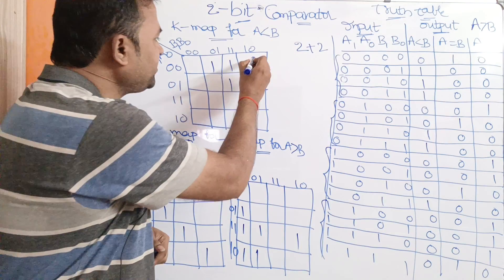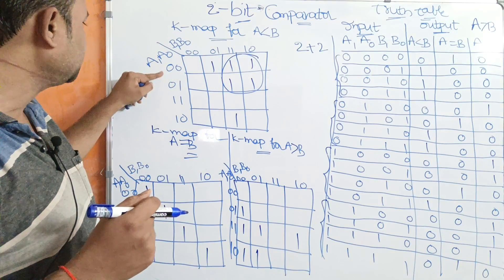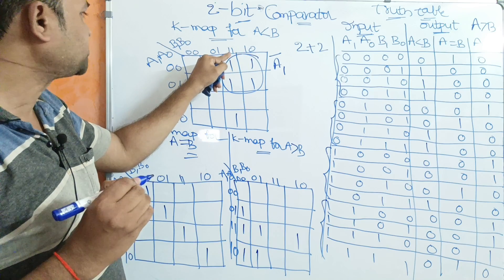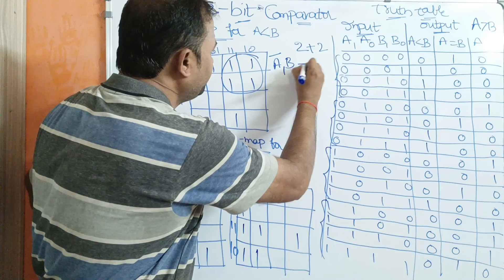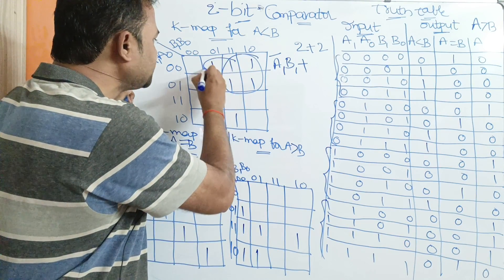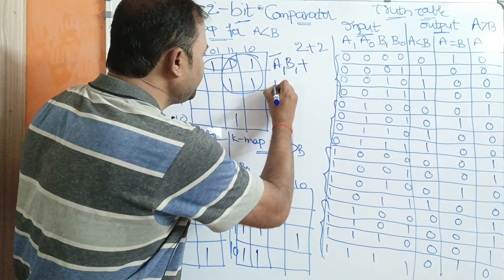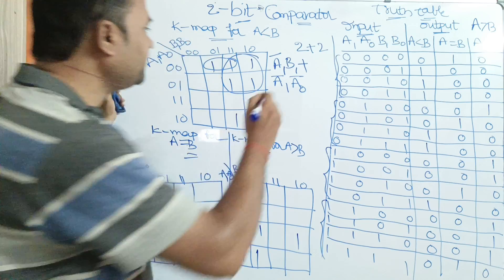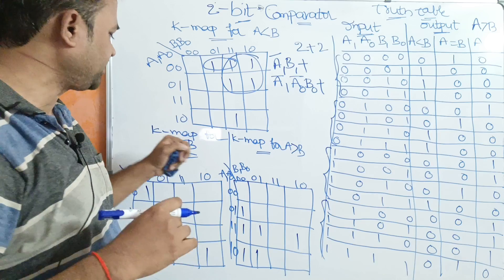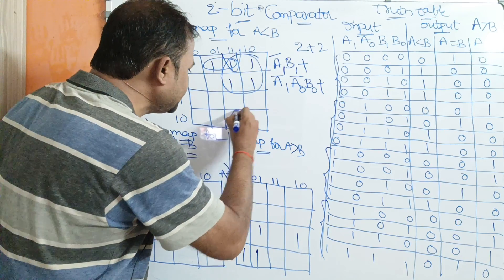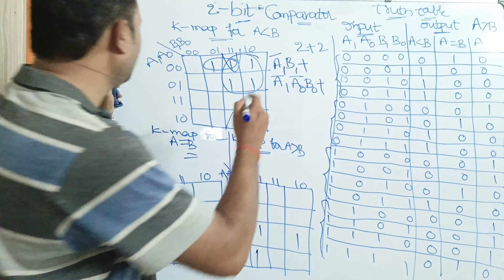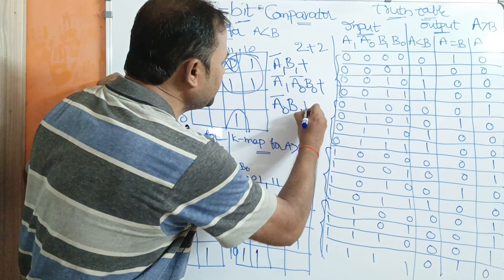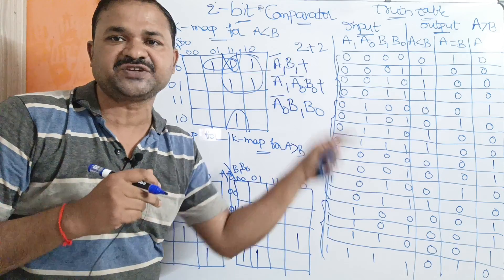We can combine four cells into one group where A1 bar is common, and B1 is common, giving A1 bar · B1. Plus, we combine two cells where A1 bar, A0 bar is common and B0 is also found, giving A1 bar · A0 bar · B0. Plus, two more cells where A0 bar is common with B1 · B0, giving A0 bar · B1 · B0. So the simplified expression for A less than B is: A1_bar·B1 + A1_bar·A0_bar·B0 + A0_bar·B1·B0.